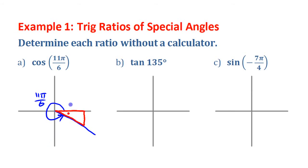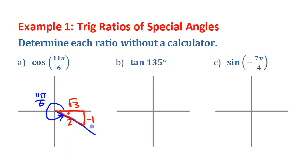We draw the reference triangle with the longer √3 side horizontal and the 1 going downward, because that places the π/6 angle correctly. The 1 is negative because it goes down — that y-coordinate is negative. The root 3 is positive because it's to the right, and the hypotenuse (the radius) is 2. Cosine is adjacent over hypotenuse, or equivalently the x-coordinate divided by the radius. Either way, cos(11π/6) = √3/2.